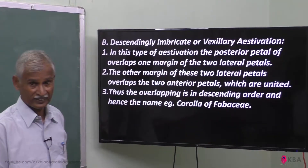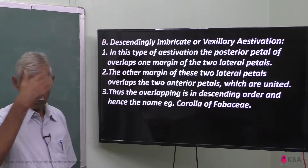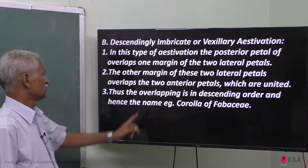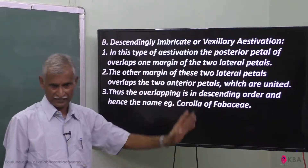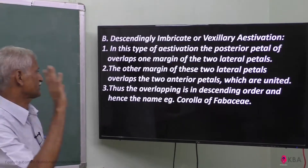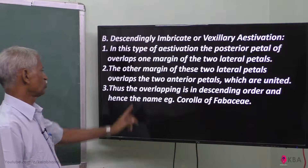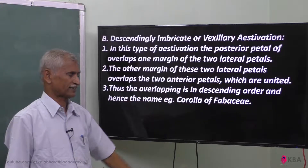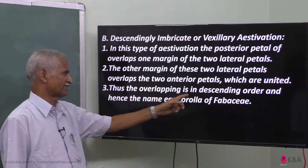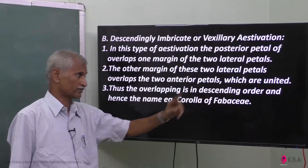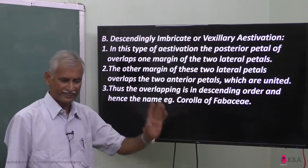Vexillary aestivation. The single odd posterior petal overlaps one margin of the two lateral petals. The other margin of these two lateral petals overlaps the two anterior petals. These anterior petals are united. Thus, the overlapping is in descending order.